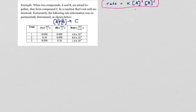Another question you will likely be asked is to find the rate constant K. We rearrange the rate law equation for K by dividing both sides by the concentration of A to the first power and B to the second power. So K equals the rate divided by the concentration of A to the first power times the concentration of B to the second power. We pick any one trial data point and plug in the values for rate, A, and B to get a numerical value for K.